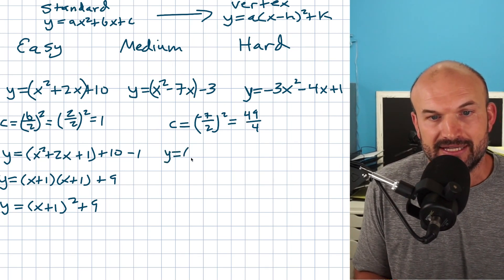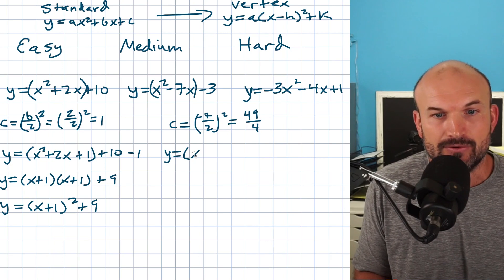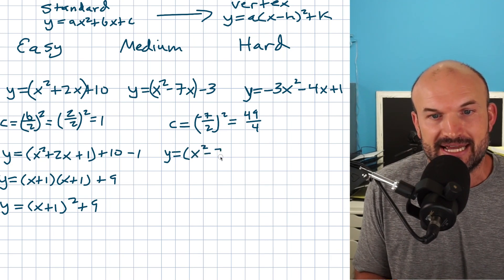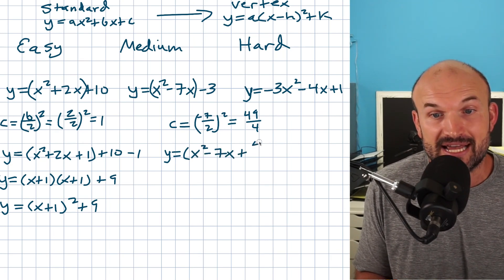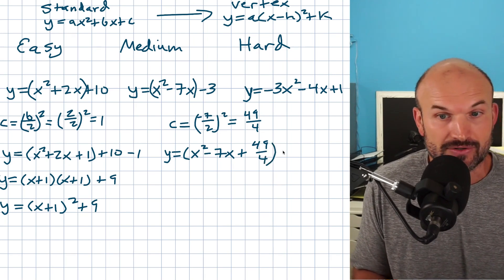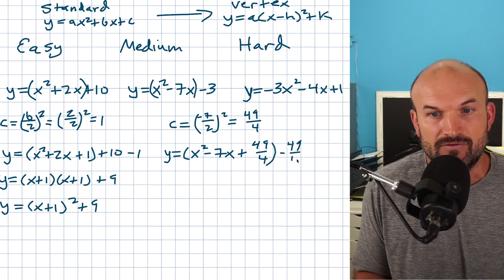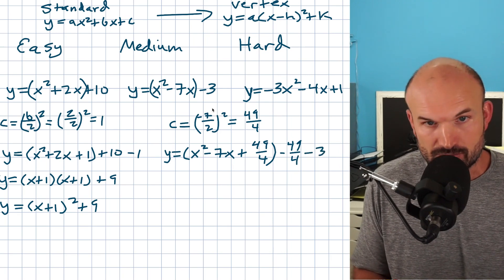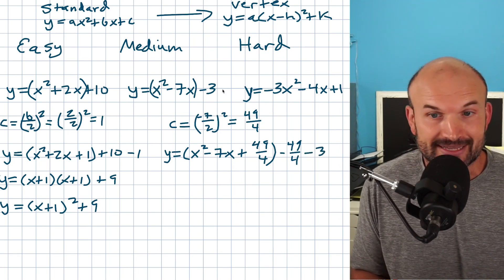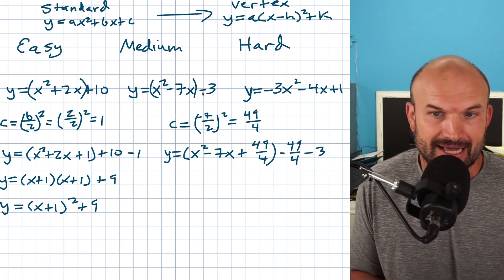I need to add that value inside my parentheses. So I have y equals the quantity x squared minus 7x plus 49 over four. And remember, whatever you add you also have to subtract — so subtract 49 over four. And don't forget the negative three at the end.